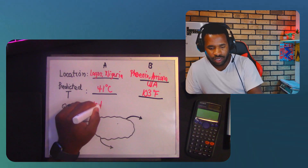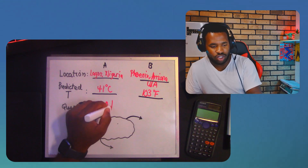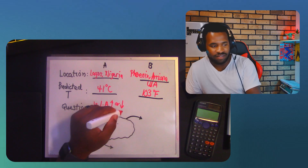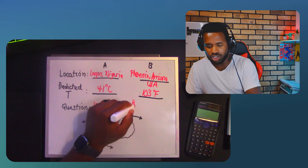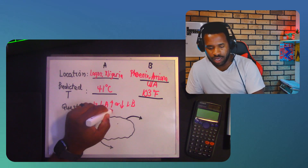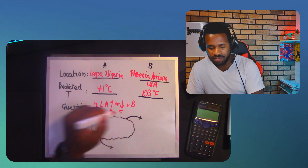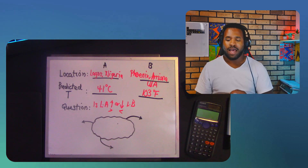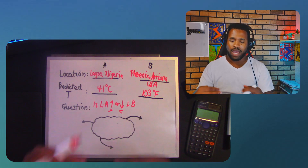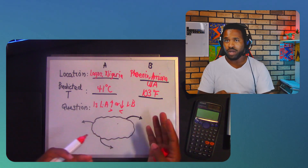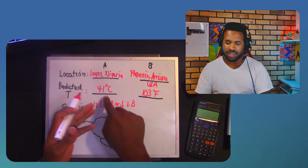The question is: is location A's temperature greater than or less than location B's temperature? We can use the greater-than or less-than symbols to compare these two temperatures. Since the units are different, we need to go back to our understanding of temperature units and how to convert from one to another.